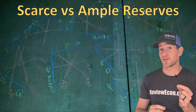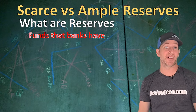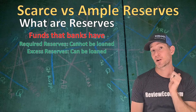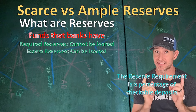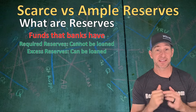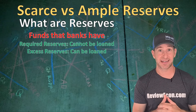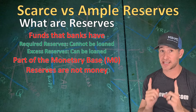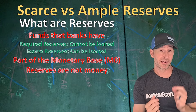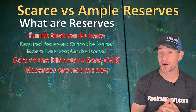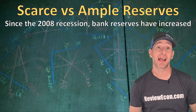Now let's talk about the difference between scarce reserves and ample reserves. Reserves are the funds that banks have available, broken down into two categories: required reserves — funds they cannot loan out, determined by the reserve requirement set by the central bank — and excess reserves, the money that can be loaned out. Remember that reserves are part of the monetary base or M0, but reserves are not money. The other component, currency, is money and is part of the M1 money supply.